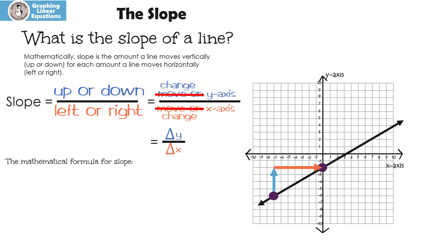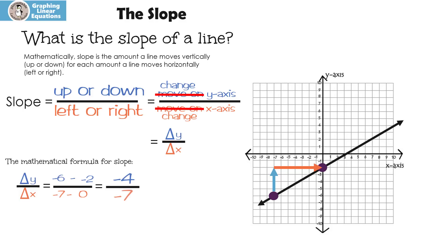The mathematical formula for slope — this is the one we're going to use. Let's start with what we know: the change in y over the change in x. Looking at our graph, the change in y is negative six minus negative two, and the change in x is negative seven minus zero. We're trying to figure out the distance. Negative six minus negative two ends up with negative four, and negative seven minus zero is negative seven. A negative divided by a negative is a positive.